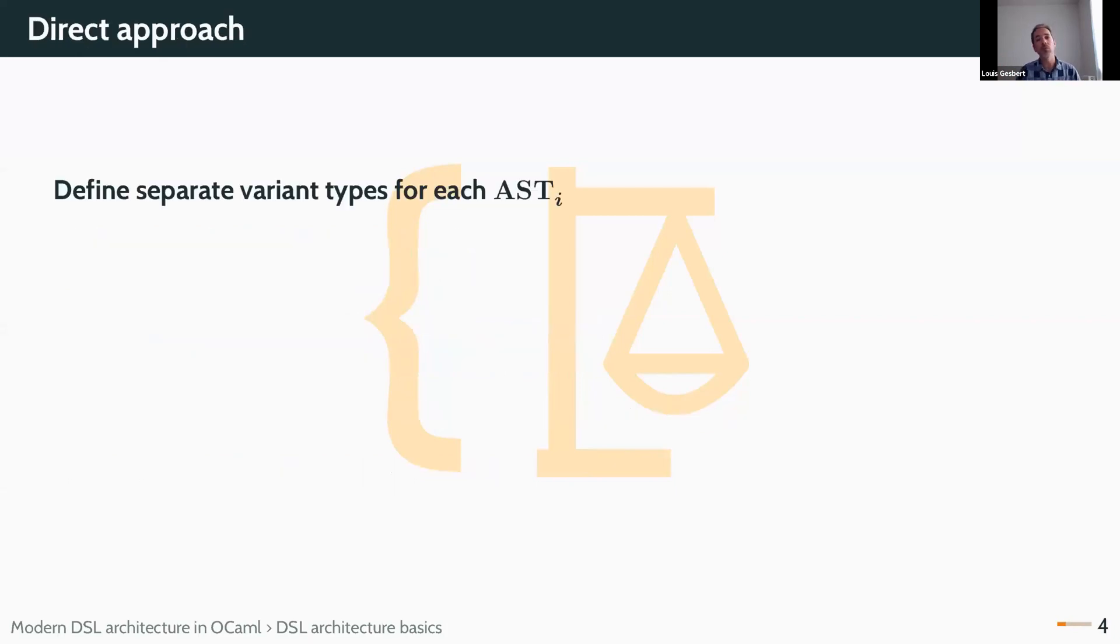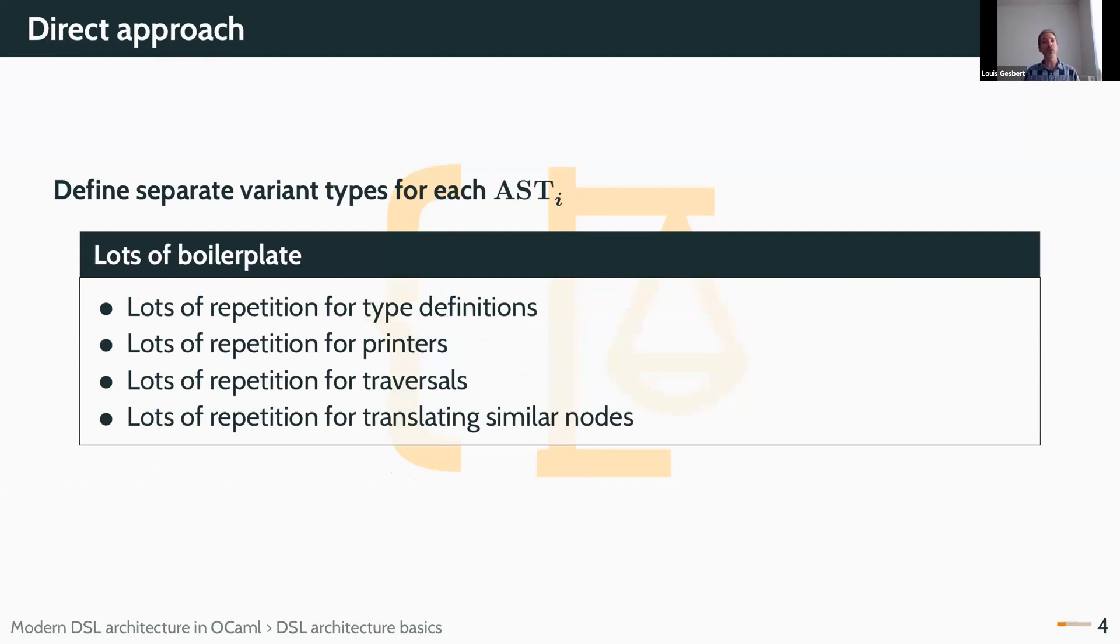The direct approach for this, which is okay for big projects I guess, is to define one module with one separate variant type for each AST. The problem with this is that you end up with lots of boilerplate, because between your different type definitions, there will be a lot of overlap. And then, if you want printers for your intermediate ASTs, if you want traversal functions, any tooling function, and even when you translate from one AST to the next, you will have to repeat all the cases of your ASTs, because everything is translated at each step. This also reduces the opportunity for tooling across passes, and makes the specific work being done by your pass less obvious.